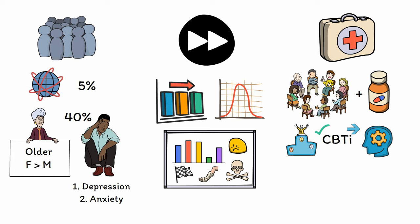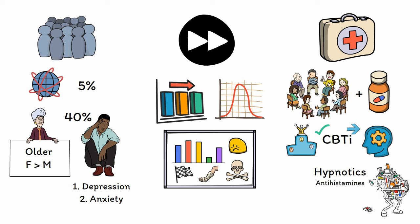Medications used to treat insomnia are known as hypnotics and consist of a wide variety of drugs with different mechanisms of action, including antihistamines like diphenhydramine or Benadryl, benzodiazepines like lorazepam or Ativan, and Z drugs like zolpidem or Ambien. While the efficacy of these drugs varies depending on the class, as a whole, their effects tend to be limited to the time in which they're taken, and people often develop tolerance to their sedative effects after only a few nights of regular use.